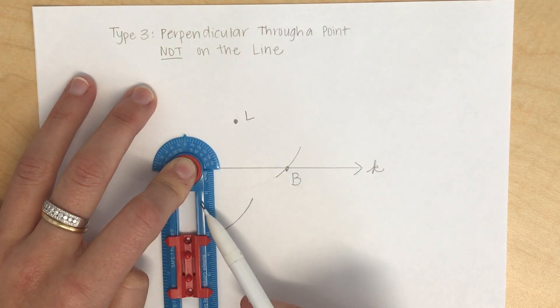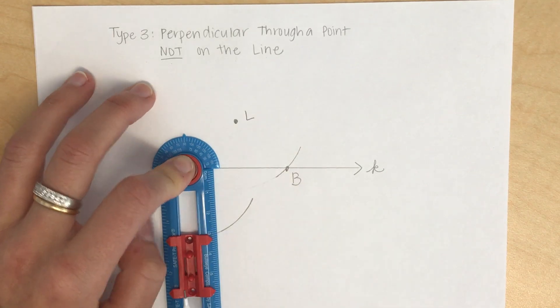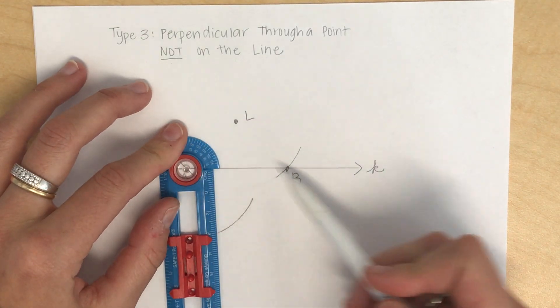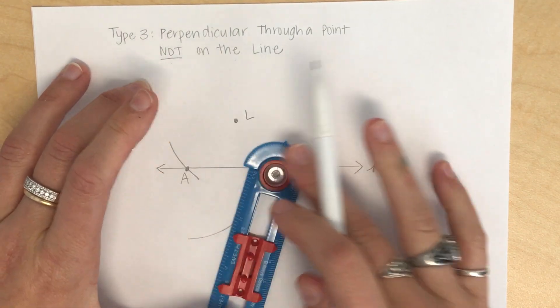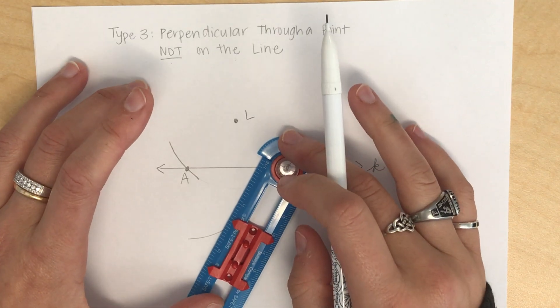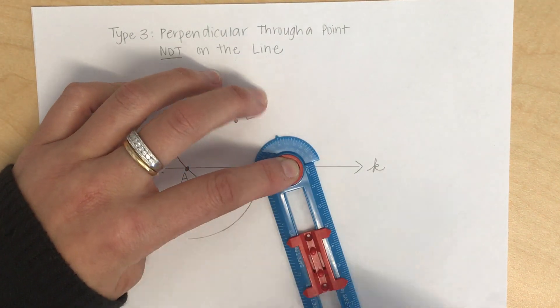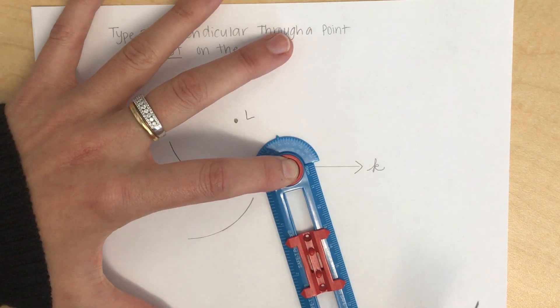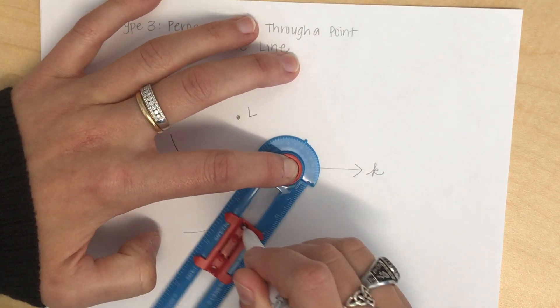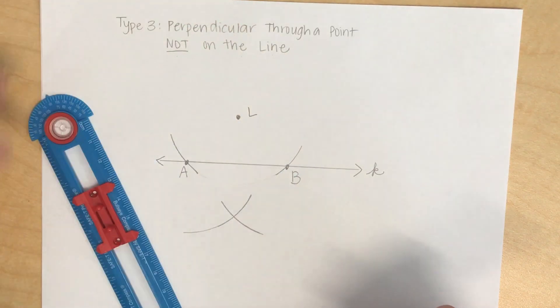Without changing that radius, I'm keeping the radius the same, I'm now going to take my compass and I'm going to put the center at point B. Using that same radius, I'm going to draw another arc below that intersects the arc that's at the bottom. So something like this.